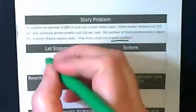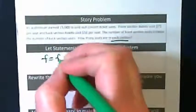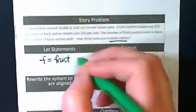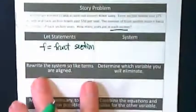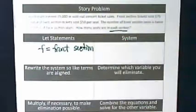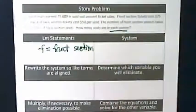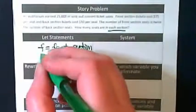Front section and back section. So we're going to let f equal front section. And what's a variable we should use for back section? We could use b.